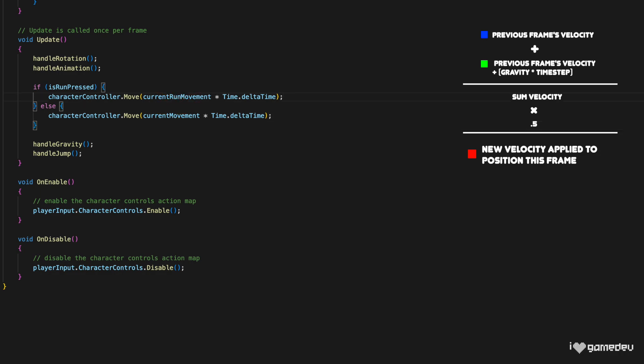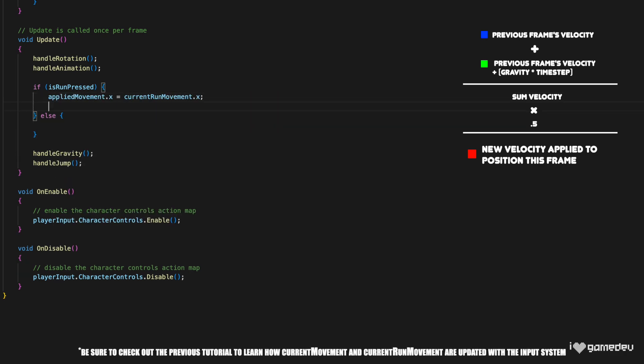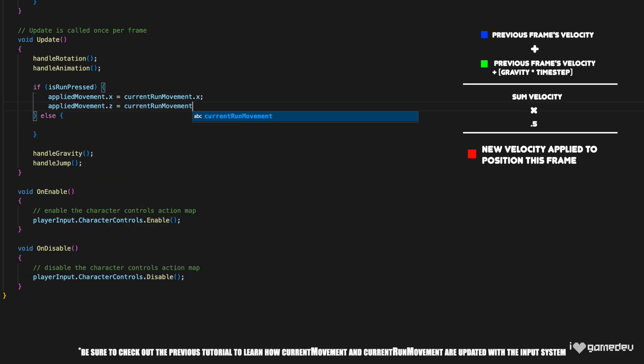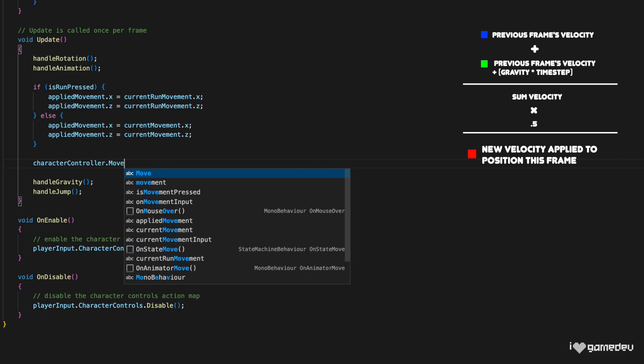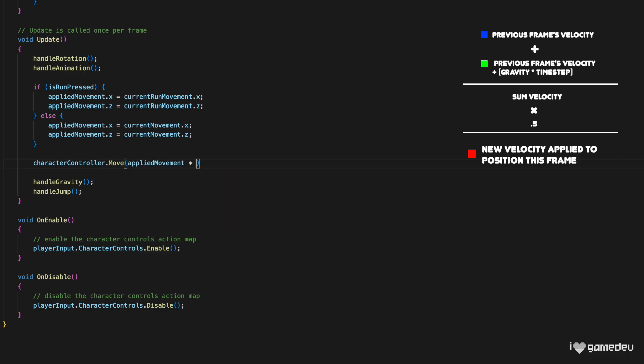No problem, we'll just delete the current usage of the character controller's move methods. And instead, we'll set the appliedMovement's x and z values equal to the currentMovement and currentRunMovement's x and z values depending on if the run button is pressed or not. Now, all we need to do is use the character controller's move method with the applied movement times Time.deltaTime.